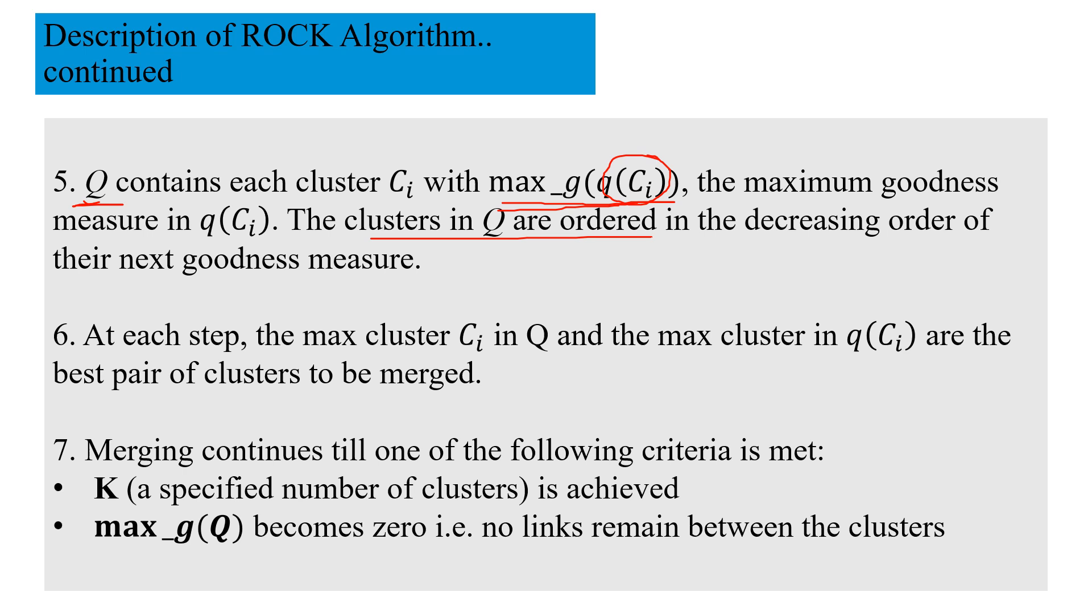At each next step, which are the best clusters to be merged? The max cluster Ci in Q and the max cluster in Q(ci). If we first take Q, it is containing the goodness measure. The one cluster which we got here, for this Q(ci) we are picking up the max cluster here and this one. These are the best pairs to be merged.